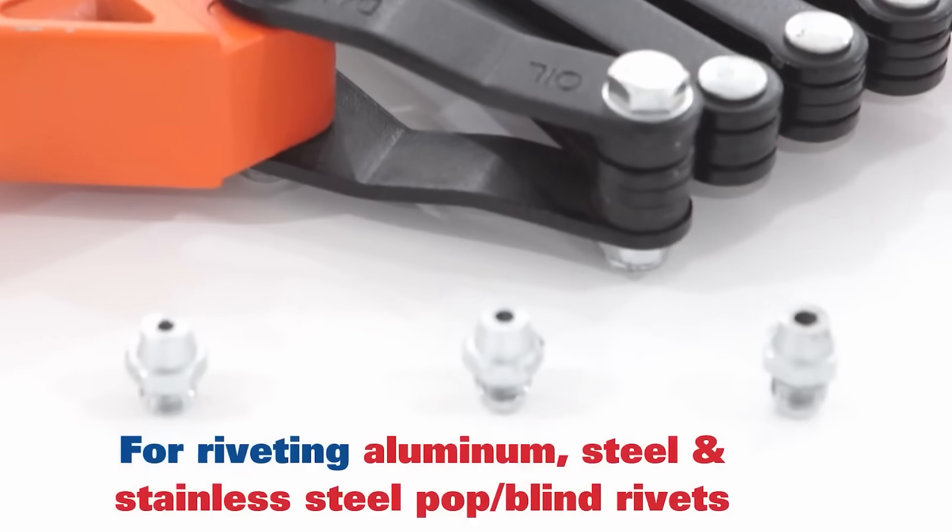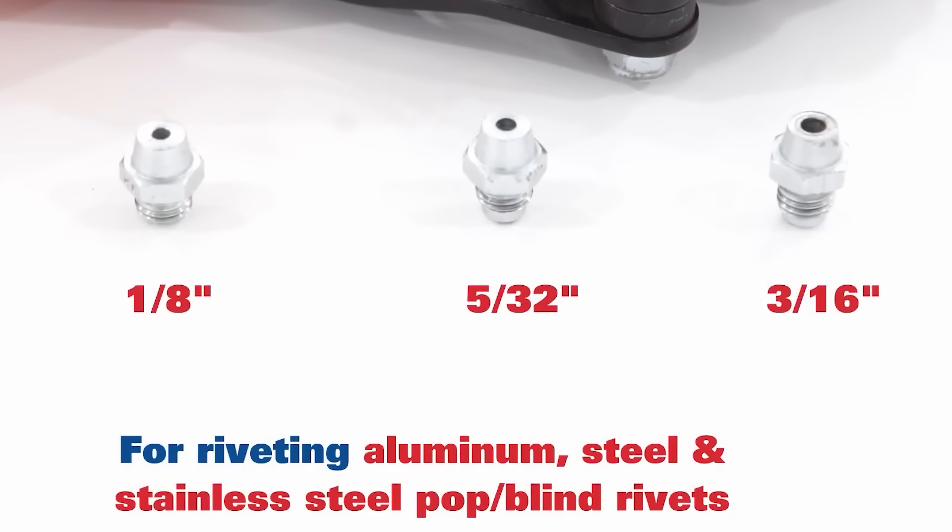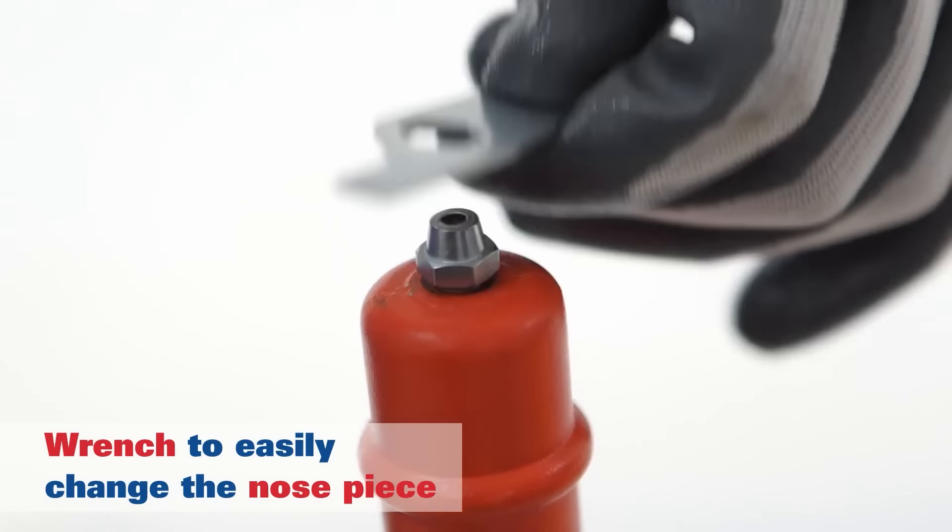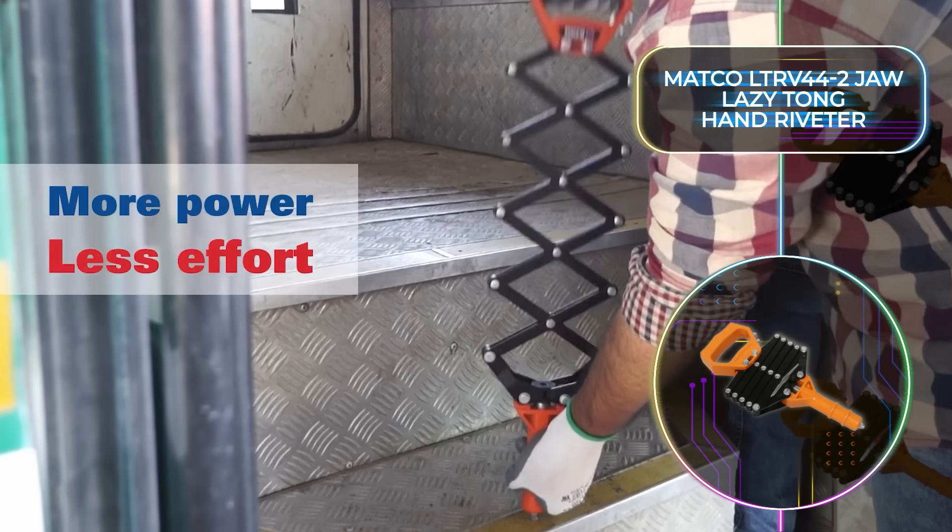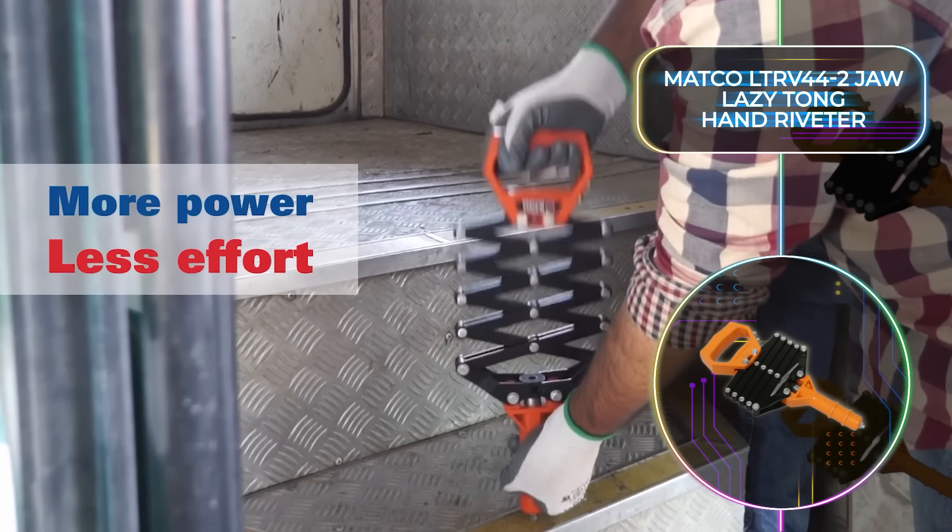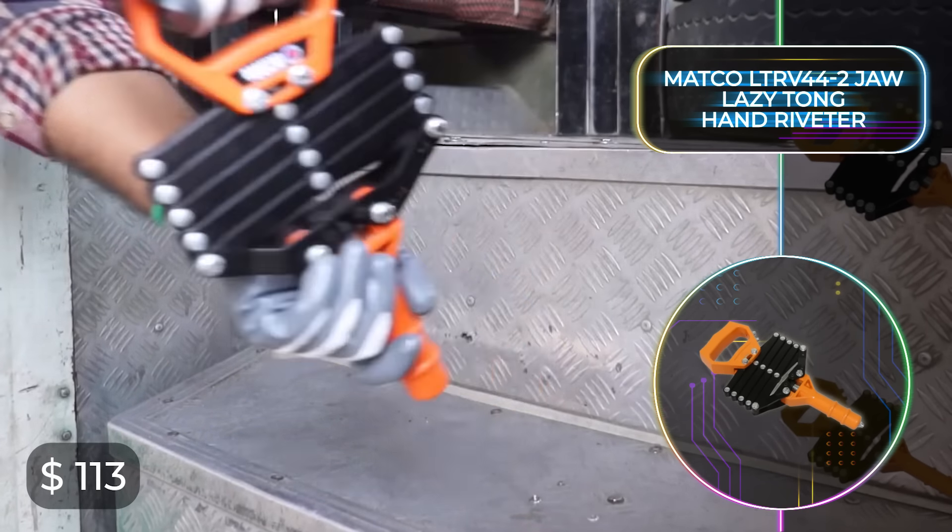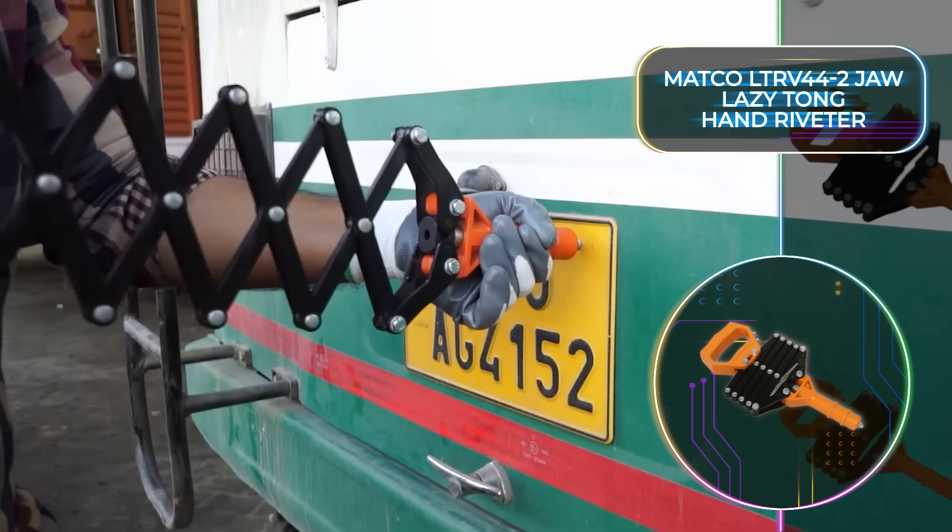When not in use, it conveniently folds up to save space. This handheld riveter also has three interchangeable tips that can be easily swapped out using the included wrench and strikes the perfect balance between portability and functionality. It's perfect for steel and aluminum rivets and it's a steal for only $113.